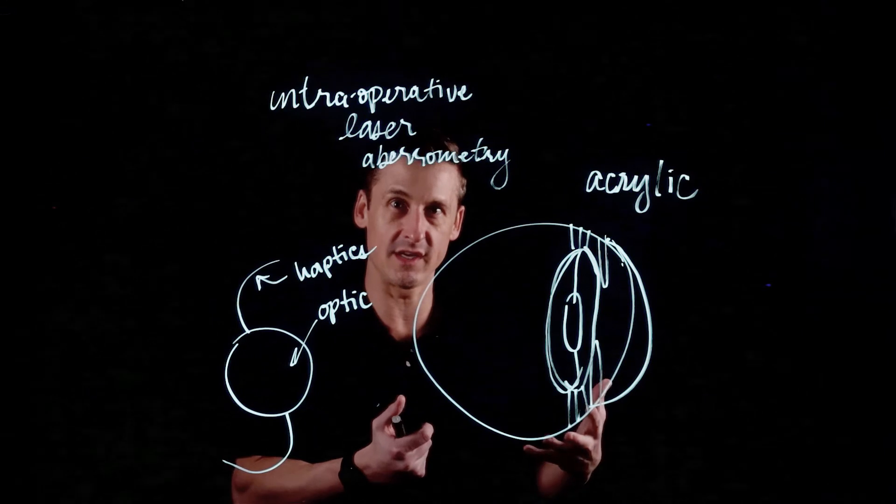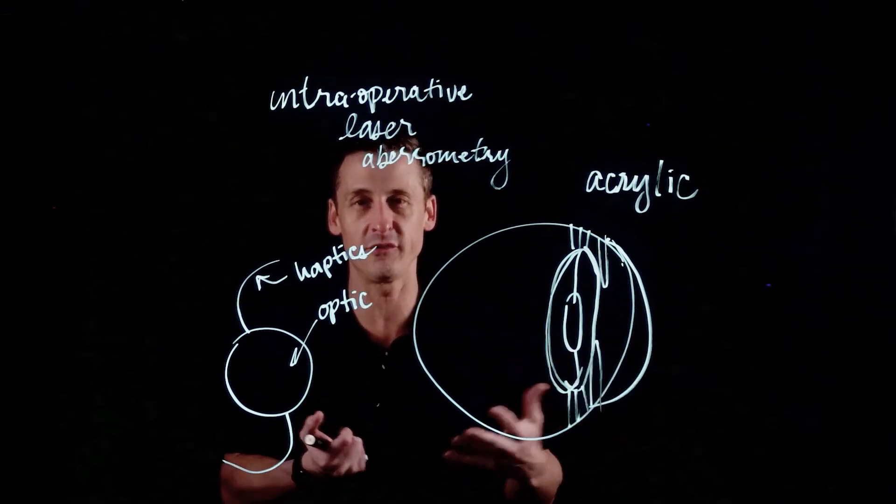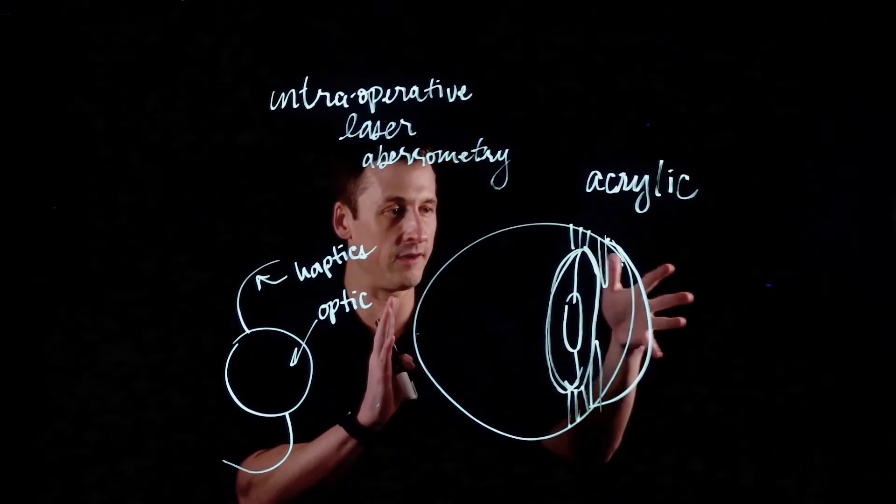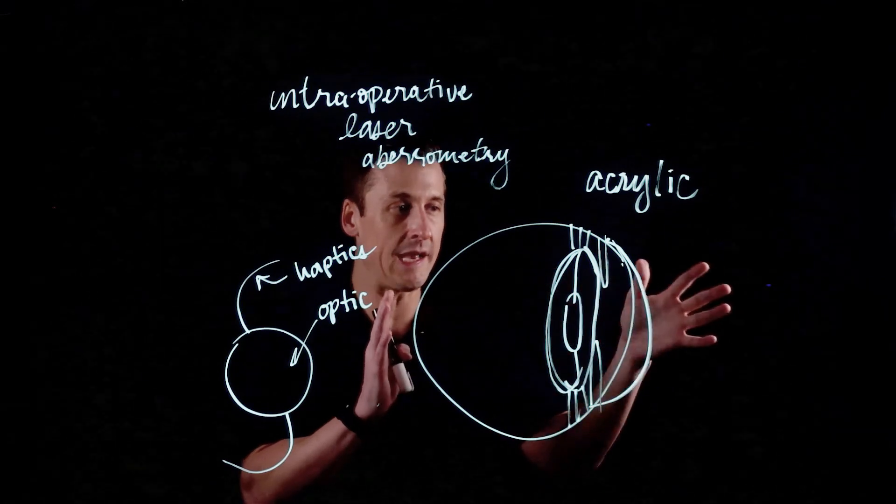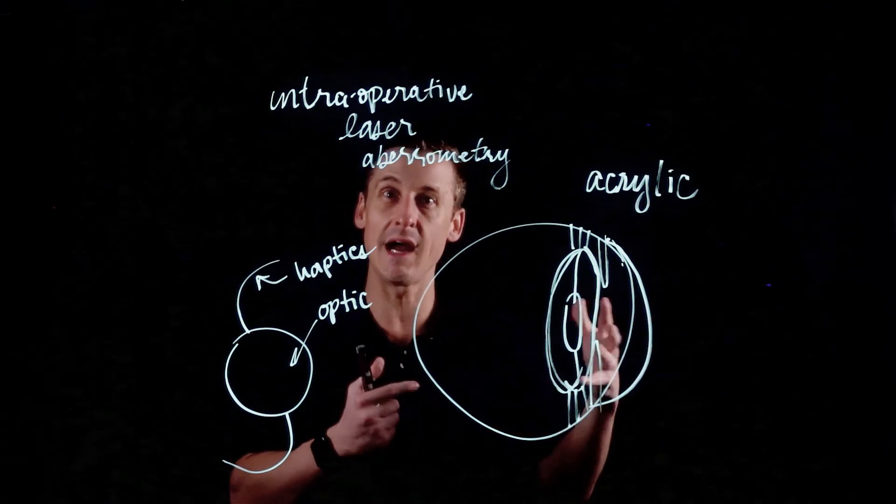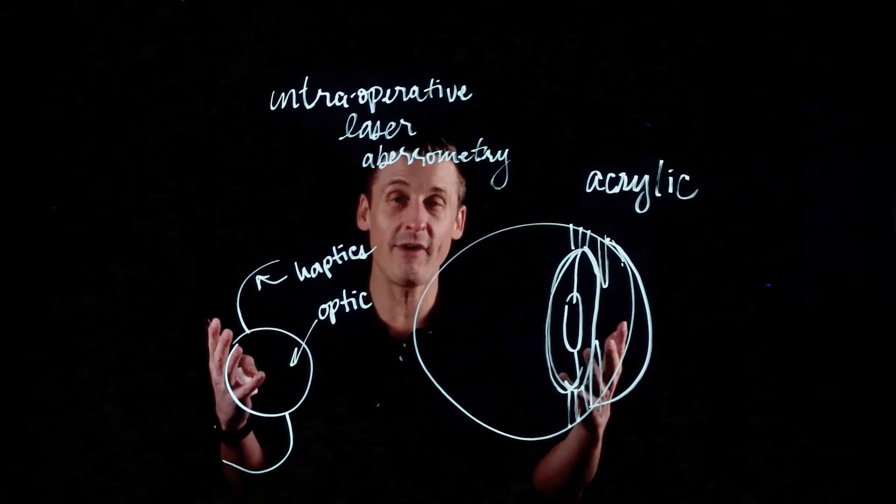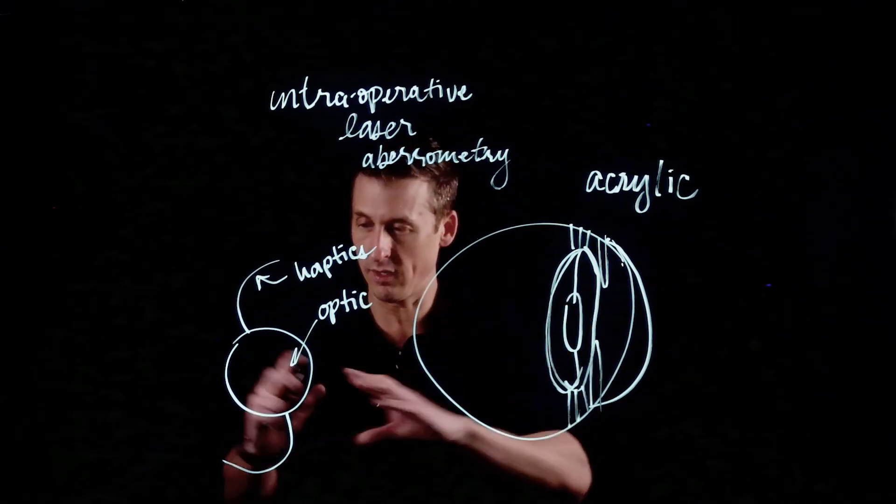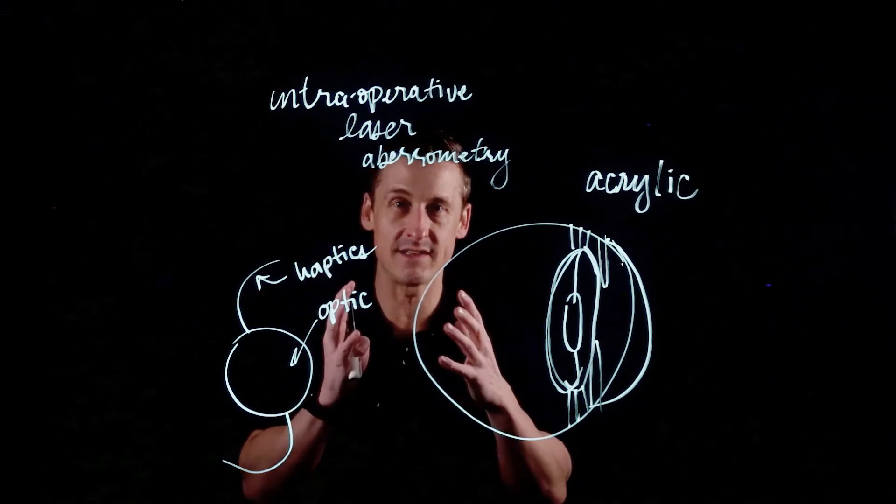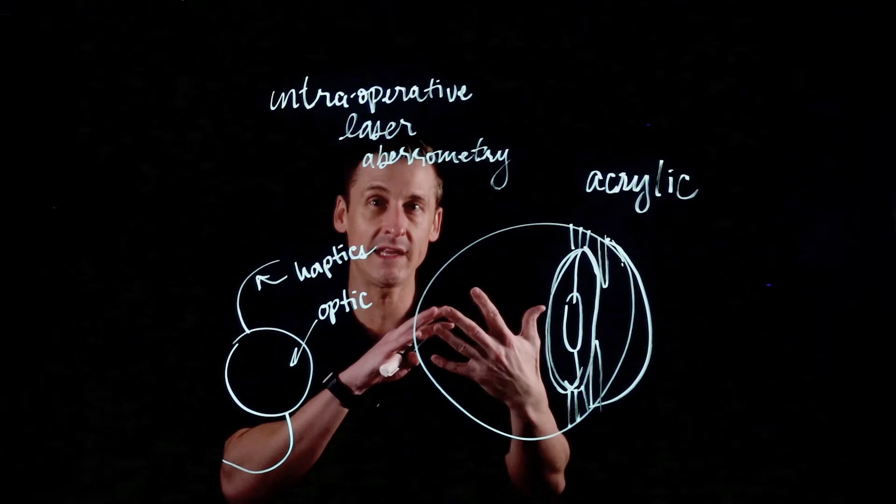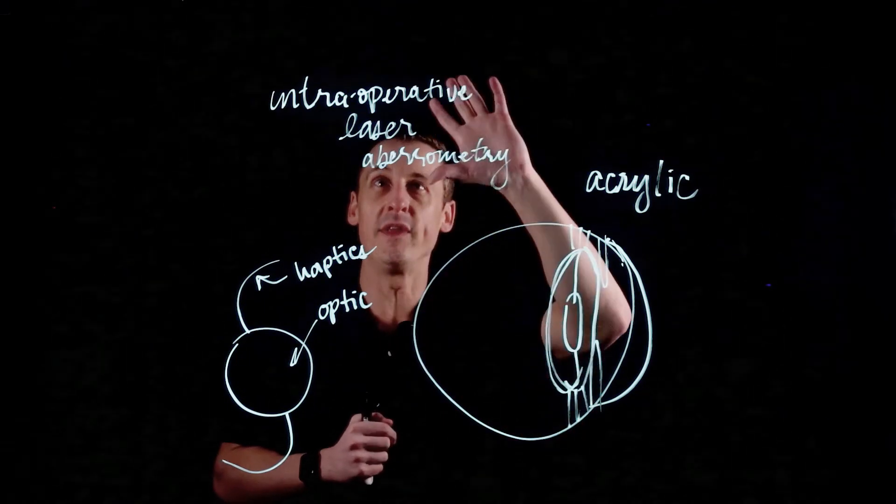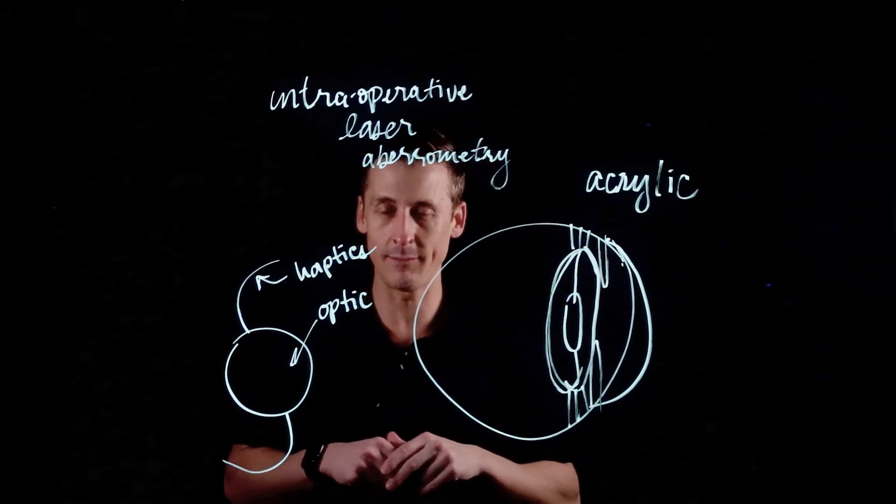So intraoperative laser aberrometry is a really long-winded way to say that with Star Trek-like technology, there's this part of the actual procedure itself where we're able to use a laser. Now it's an invisible laser, so you can't see it and neither can I, but what it does is it sends in this invisible grid pattern of laser light in the actual procedure and then measures it as it comes out to give us what the exact prescription is that this eye has. It's this thing that we never had available to us before. Calculating the power of this intraocular lens was always the product of coming up with very exact dimensions of the curvature of the eye and the length of the eye and the proportions of the eye, and then doing math to figure out what power lens do you need. With intraoperative laser aberrometry that's come along now just in the last decade...